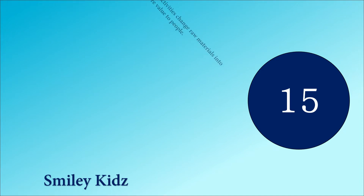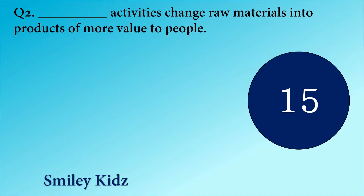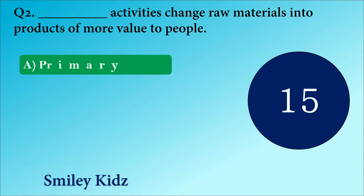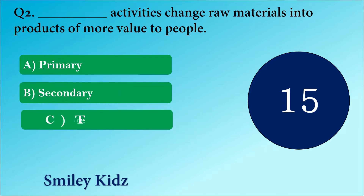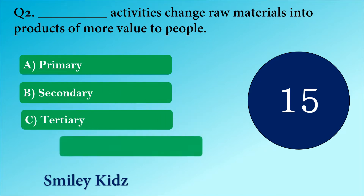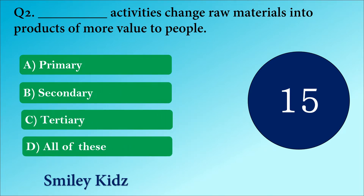Question number 2. Dash activities change raw materials into products of more value to people. The options are A. Primary, B. Secondary, C. Tertiary or D. All of these.